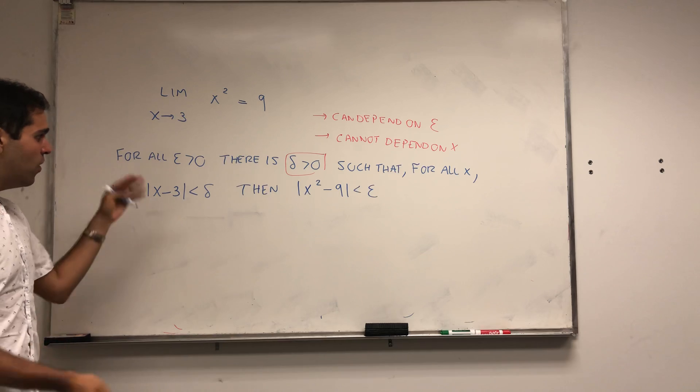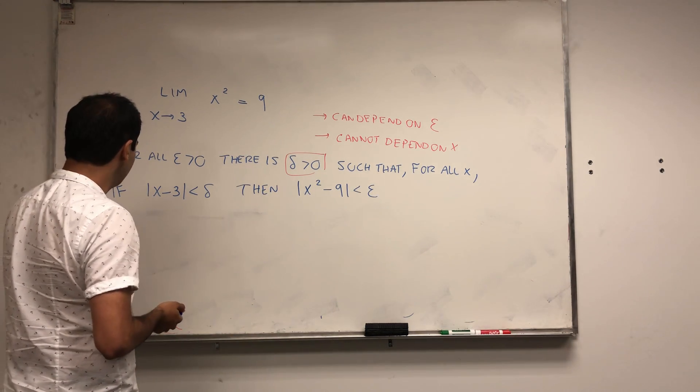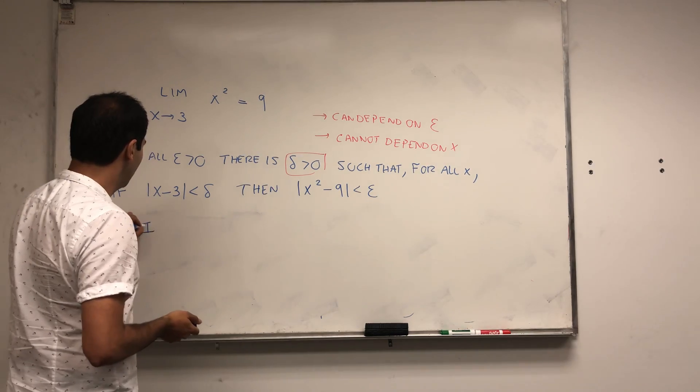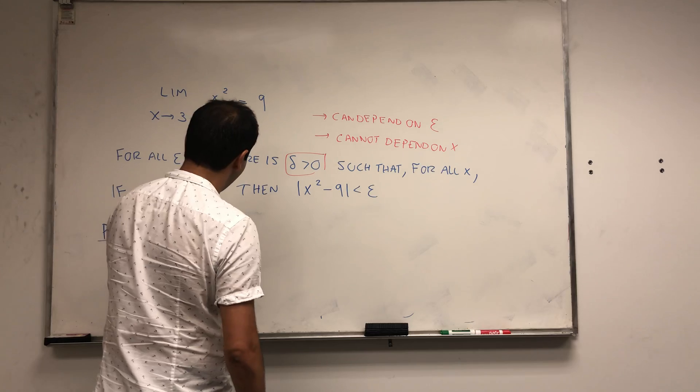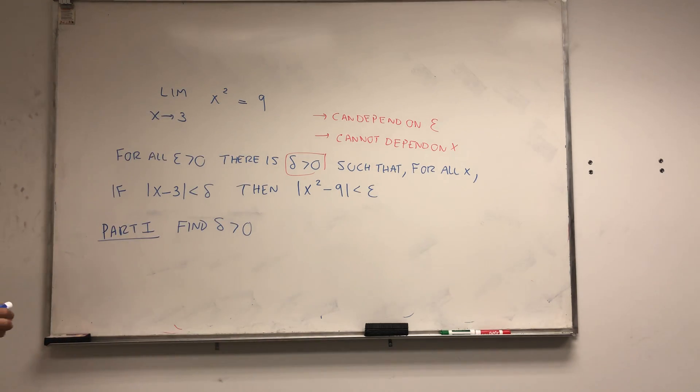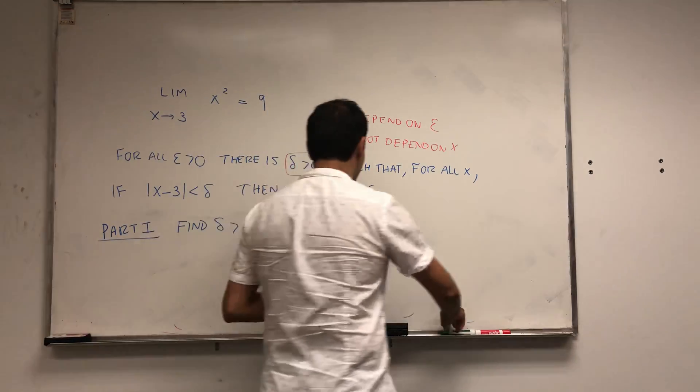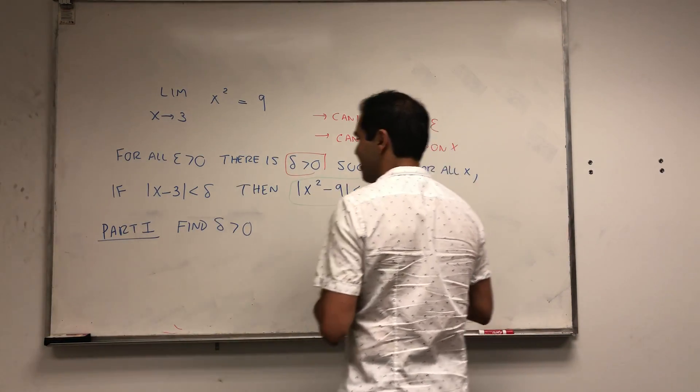So now let's do our scratch work. When we want to say there is a delta, what we really mean is we want to find delta. It's like finding Nemo, but for delta. For this you want to focus on this equation, x squared minus 9 is less than epsilon.